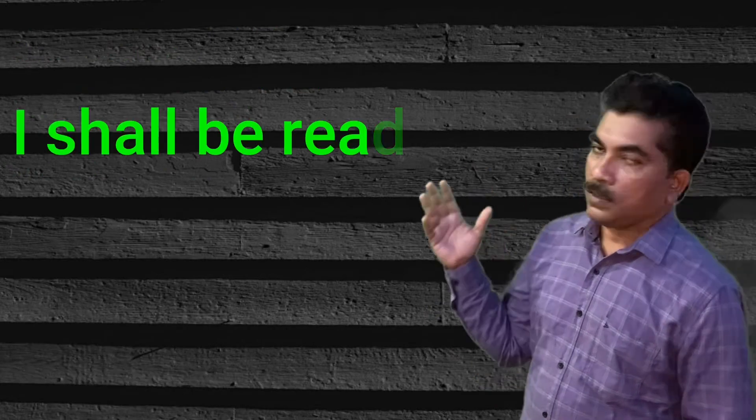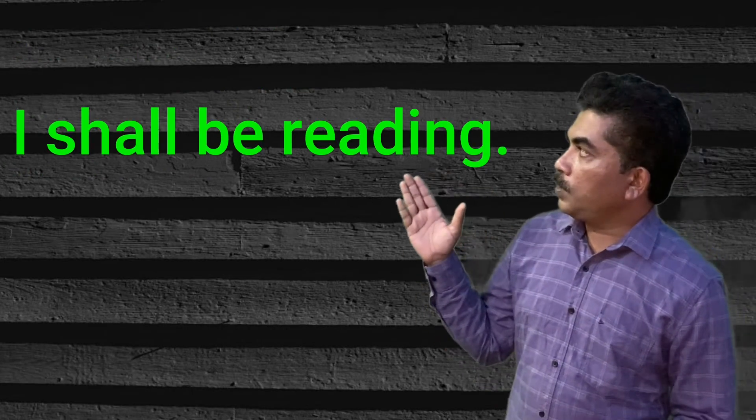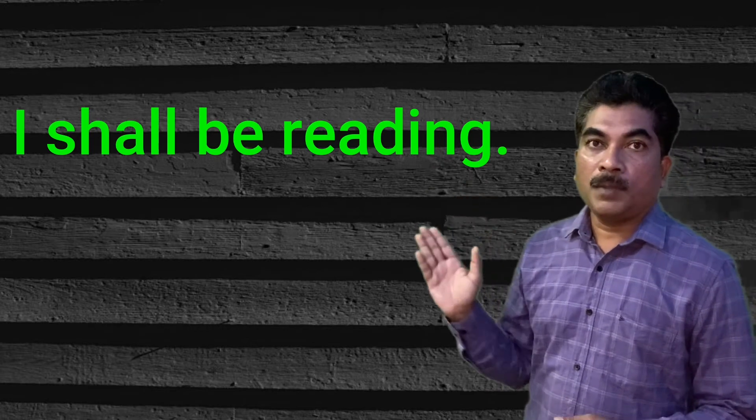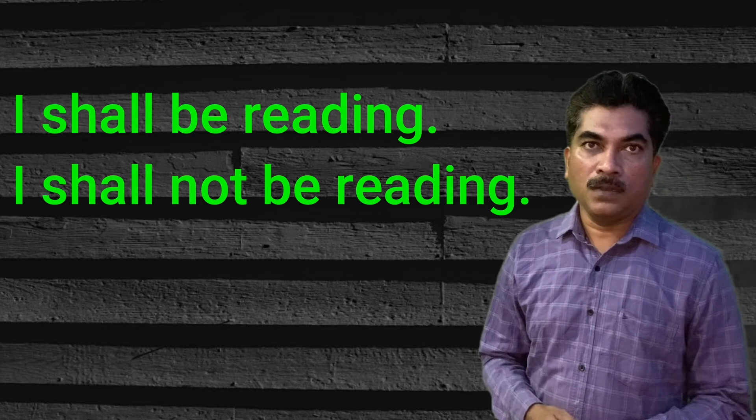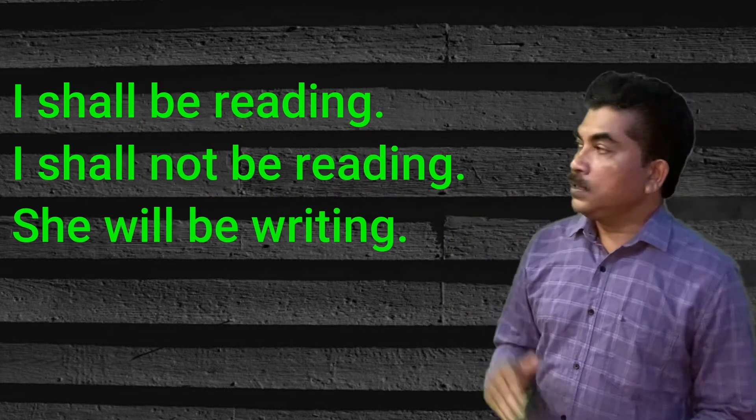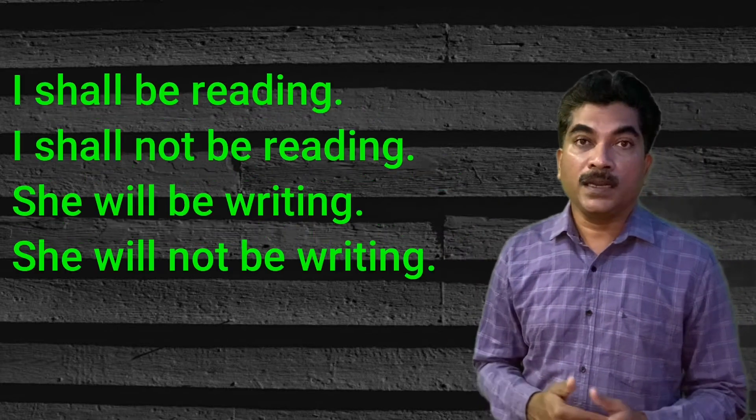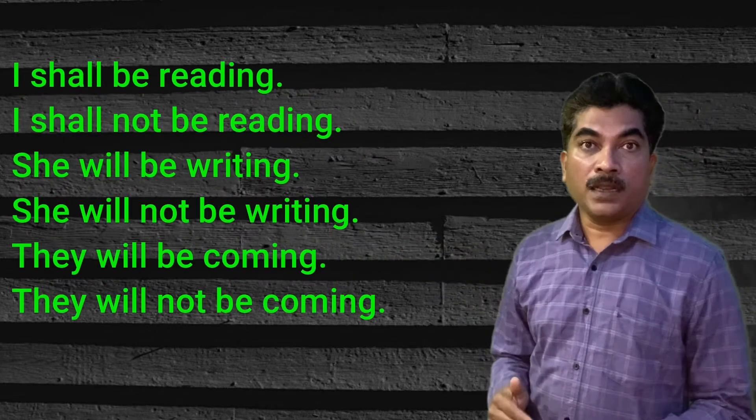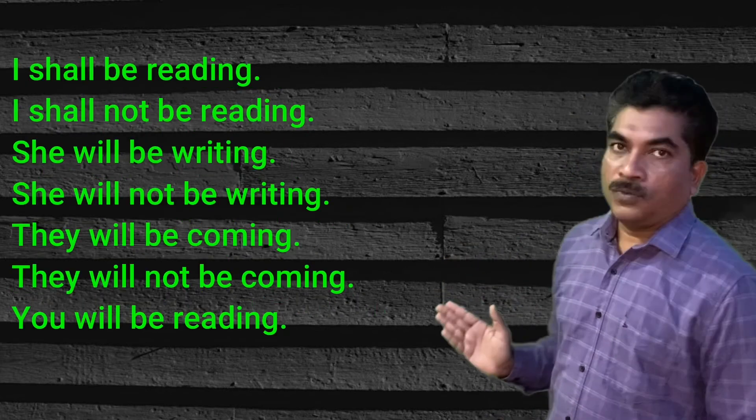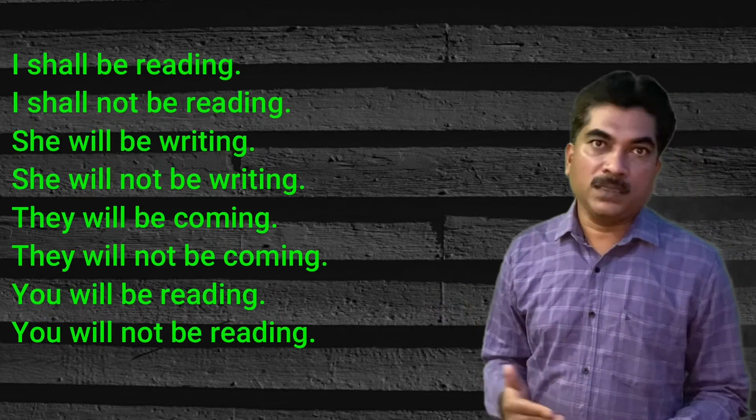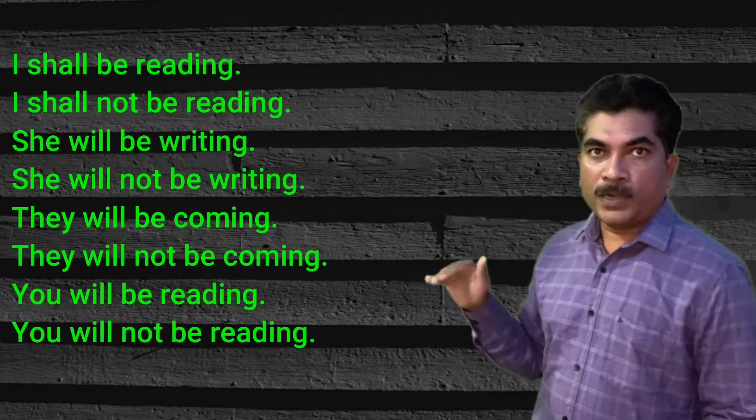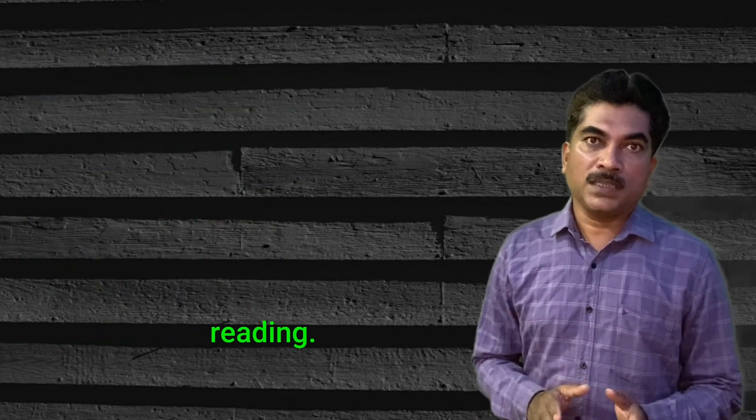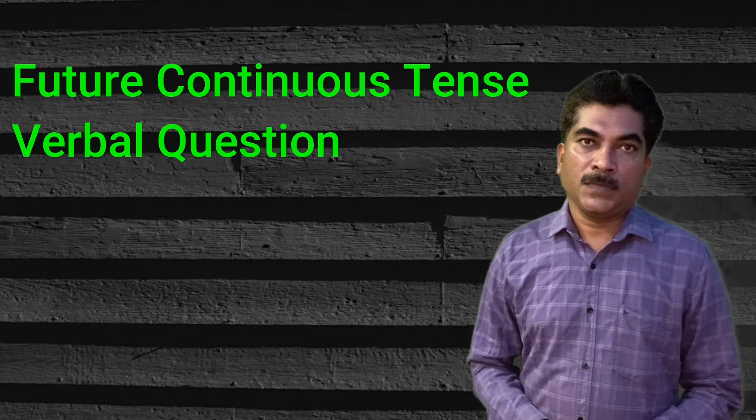For example: I shall be reading, I shall not be reading. She will be writing, she will not be writing. They will be coming, they will not be coming. You will be reading, you will not be reading. Practice affirmative then negative this way, with meaning.